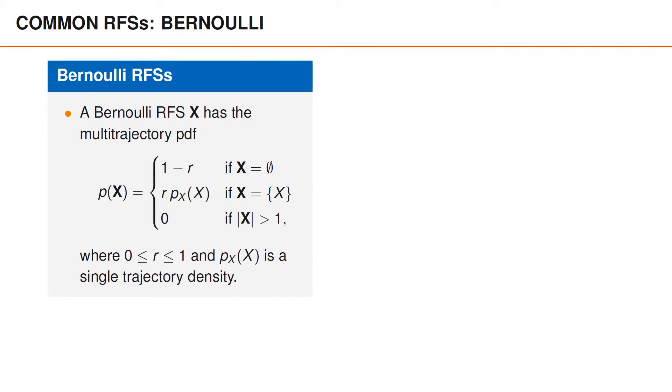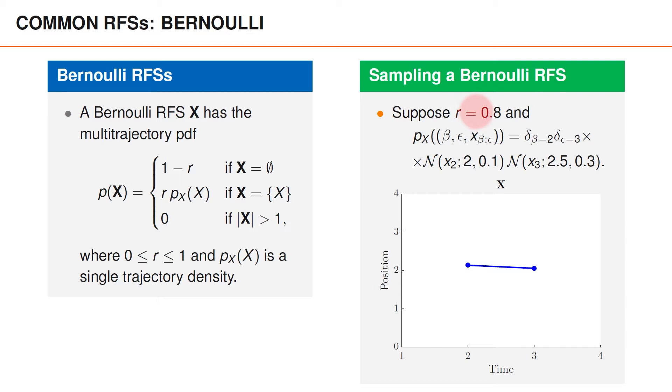I would like to end this video with something quite interesting, namely a brief description of the Bernoulli and Poisson random finite sets in the context of sets of trajectories. As usual, a Bernoulli random finite set contains at most one element. We refer to its distribution as a multi-trajectory pdf, and it takes the value 0 if the set contains more than one element, it takes the value 1-r if the set is empty, and it takes the value r times px of x, where x is not boldface, if the set boldface contains a single element x. Note that the element, capital X, is a trajectory and that px therefore describes the distribution over the trajectory, given that it exists. As an example, suppose the existence probability is 0.8, and then we have this single trajectory density. This single trajectory density is such that beta always takes the value 2, and epsilon always takes the value 3.